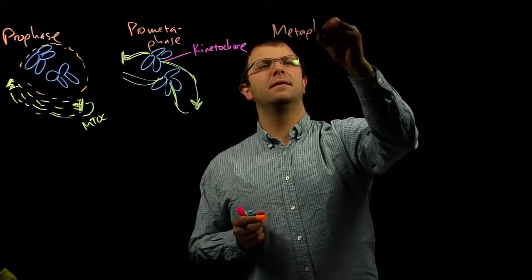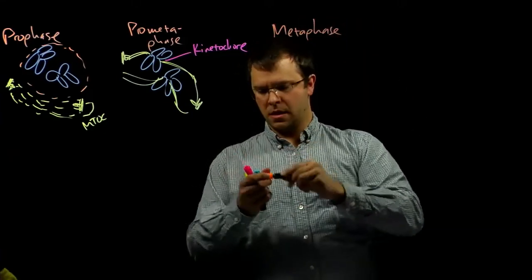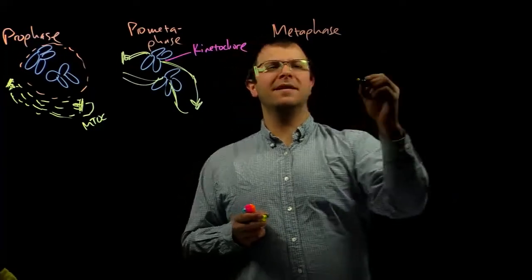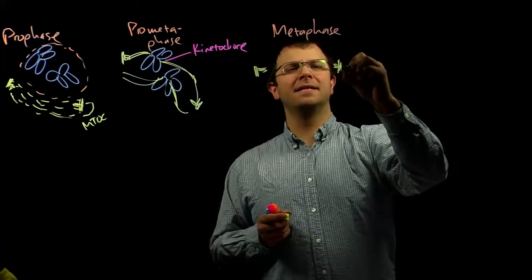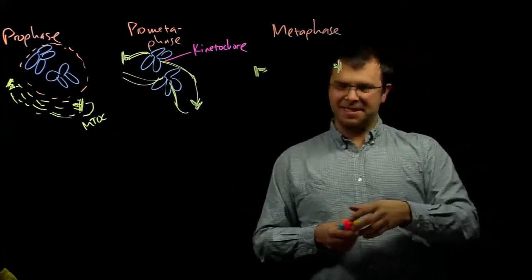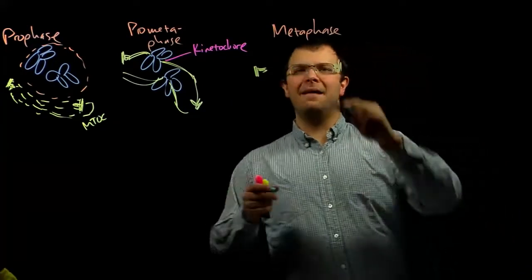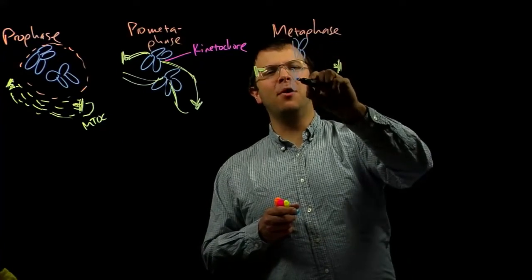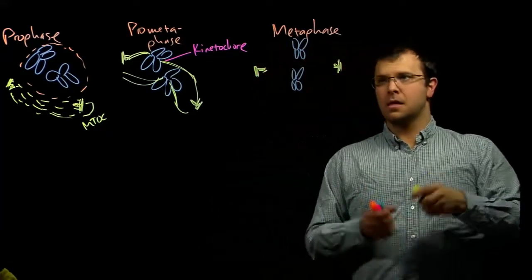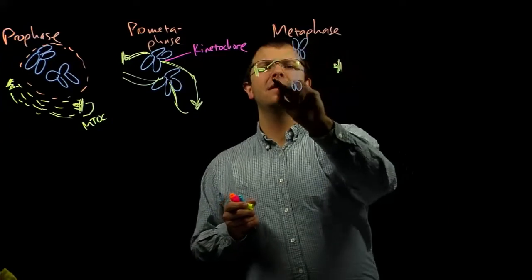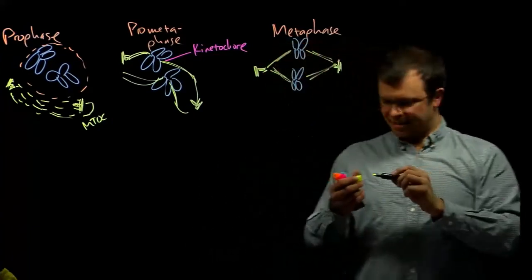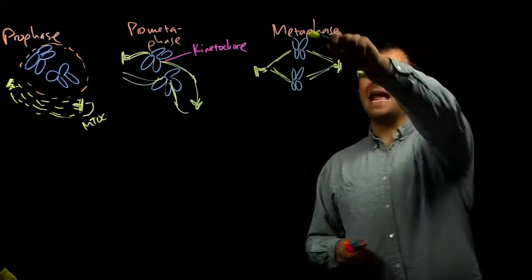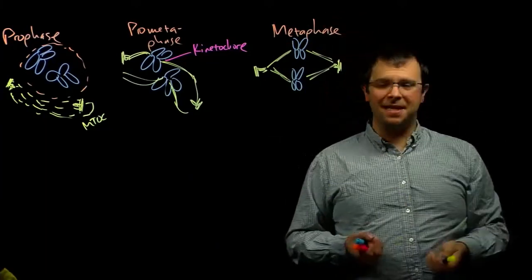You end up in the next phase, which is called metaphase. The microtubule organizing centers in metaphase end up on opposite sides of the cell. Because each chromosome is attached to both of them, and because they're being pulled on from both sides of the cell, they end up lining up down the center of the cell.